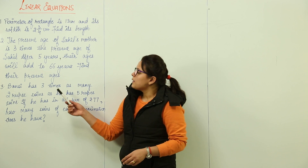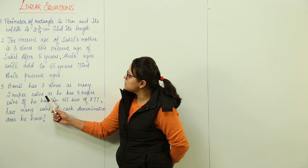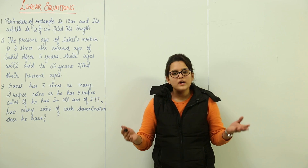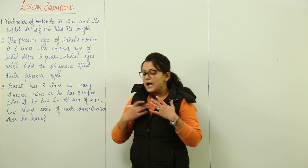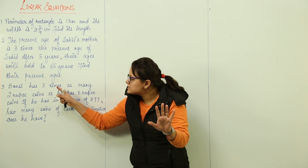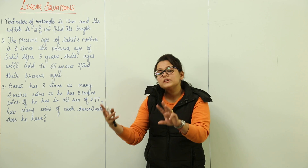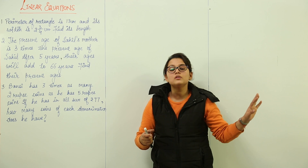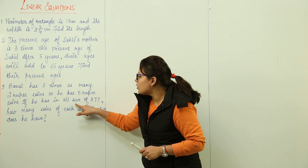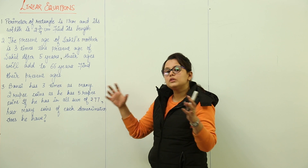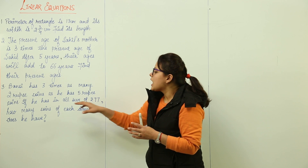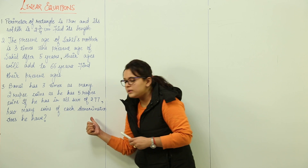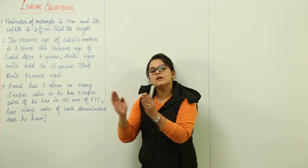The third question says: Bansi has three times as many two rupee coins as he has five rupee coins. If he has five rupee coins, he has three times more than them — meaning if he has five coins of five rupees, he would have 15 coins of two rupees. If he has a total sum of 77 rupees, how many coins of each denomination — how many two rupee coins and how many five rupee coins — does he have?